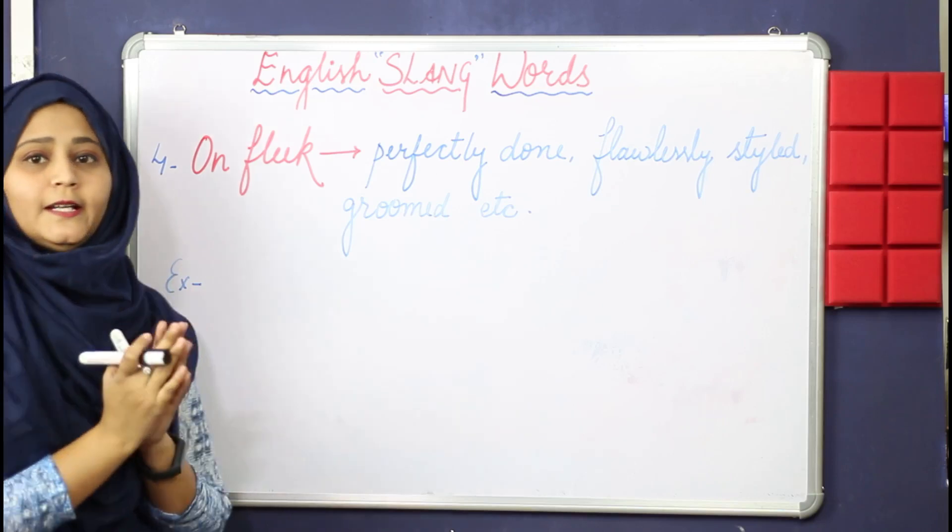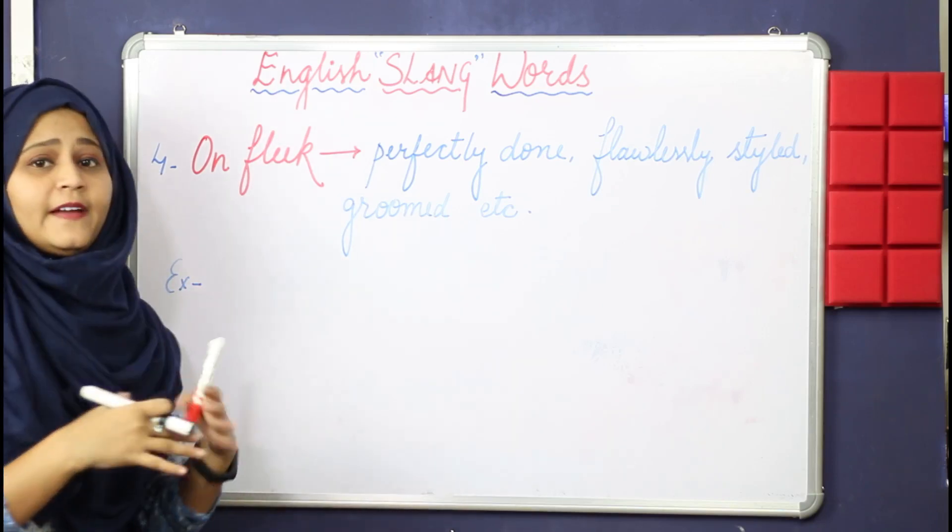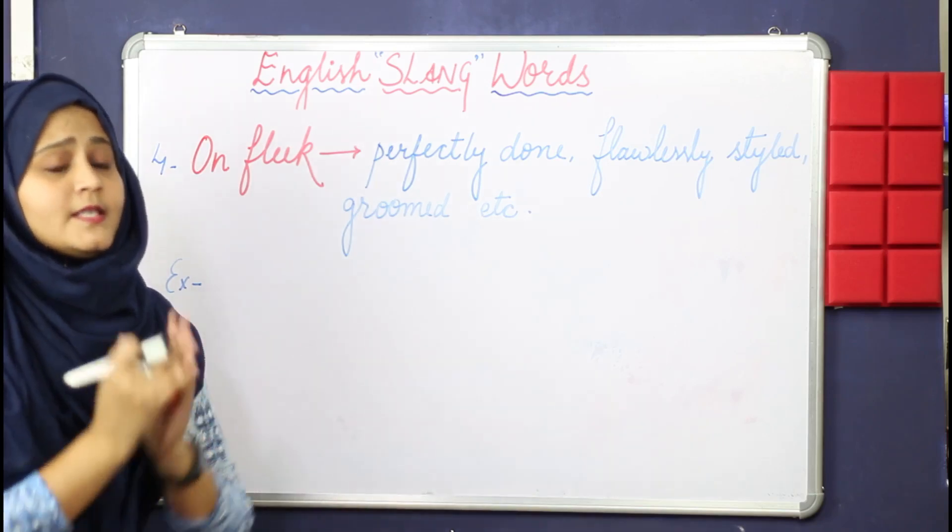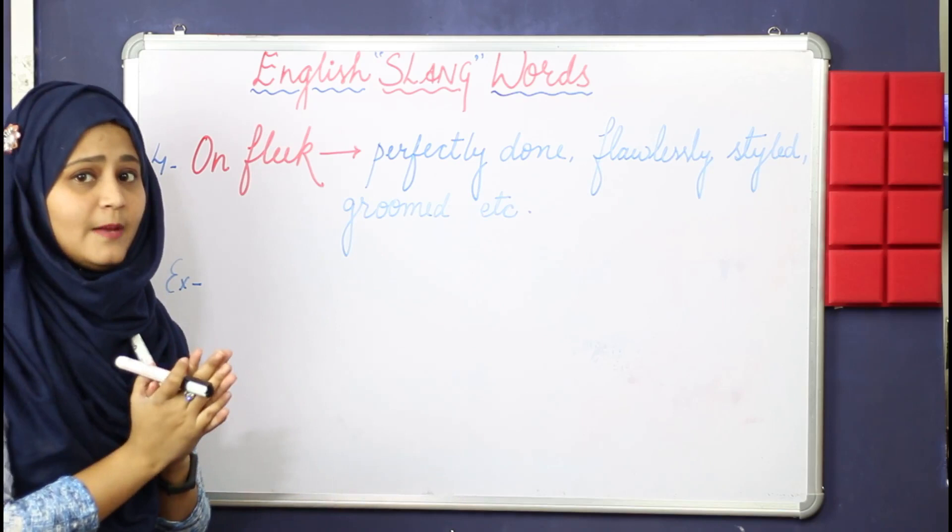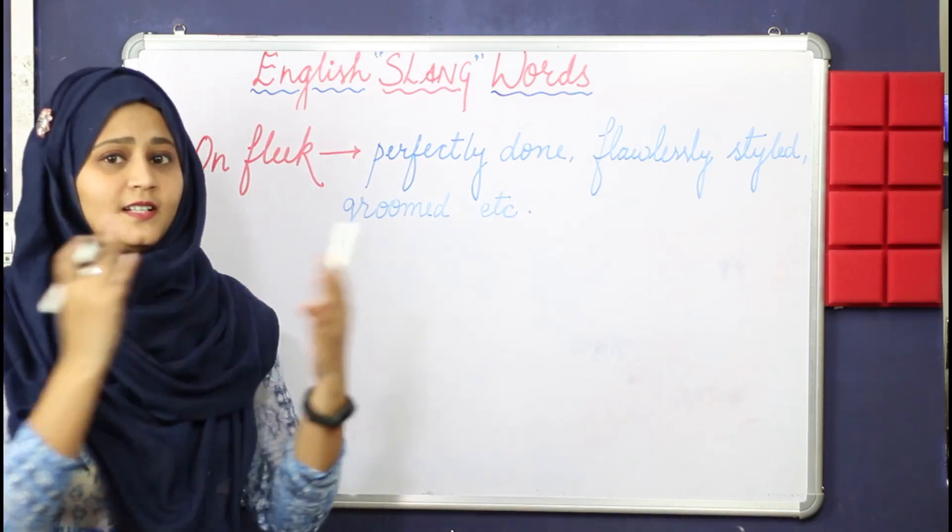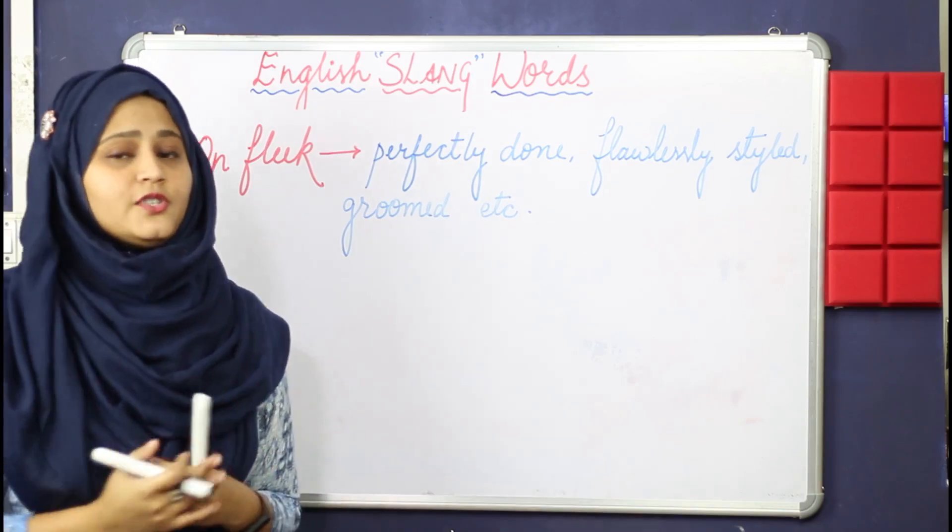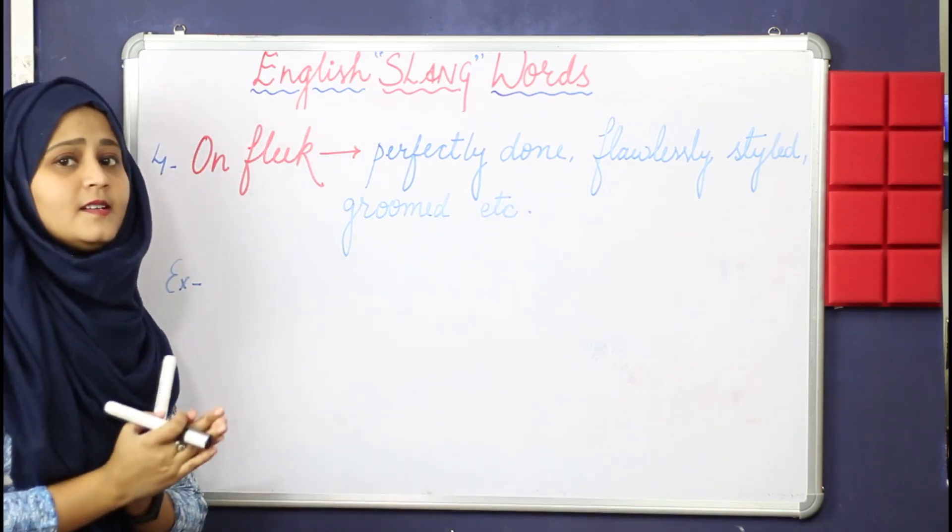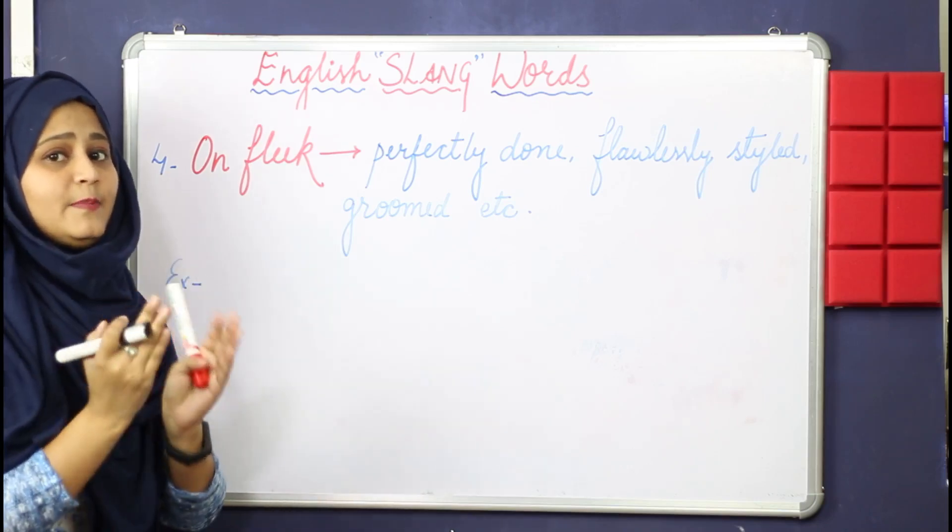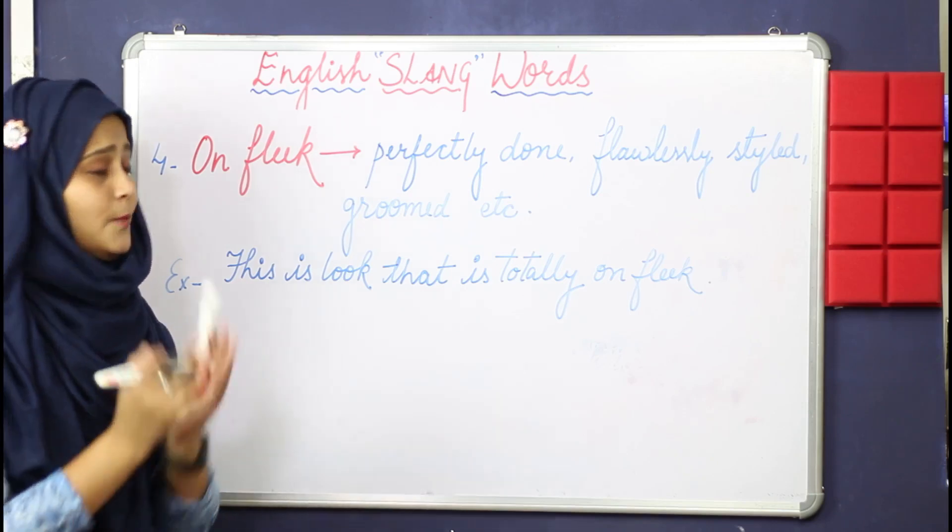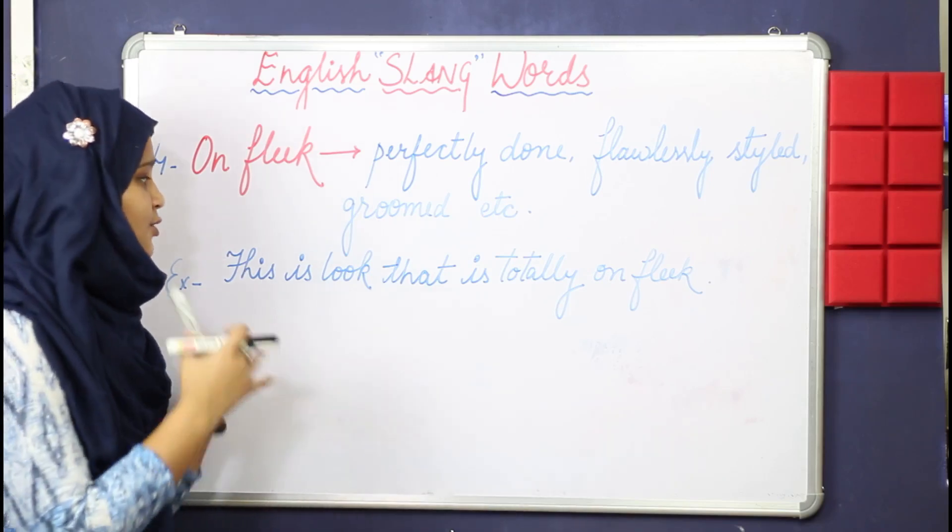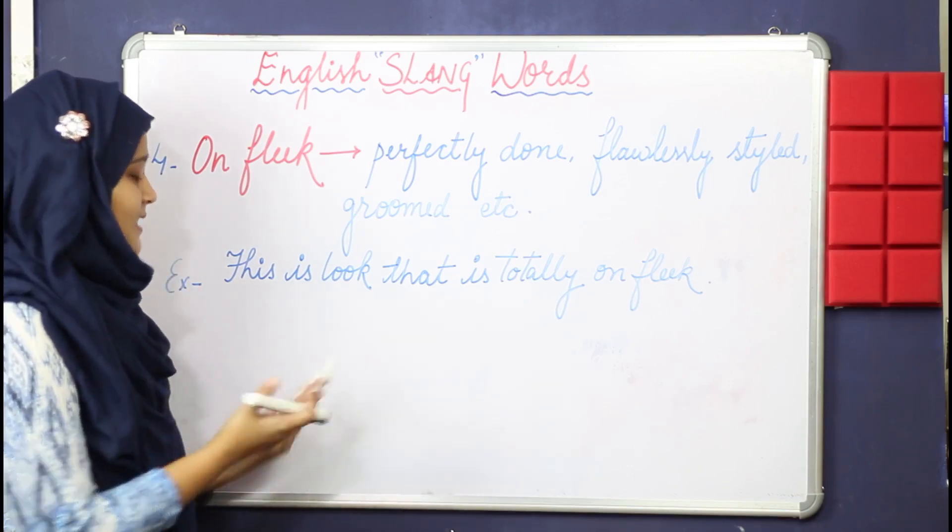Yes viewers, fourth one is on fleek. On fleek is used for perfectly done something or flawlessly styled something or groomed. So for example, let me give you one example. So I have written example for you. This is look that is totally on fleek. This way you are looking at someone's look that you are talking about. What is the look that is flawlessly styled? So this way you can use it.